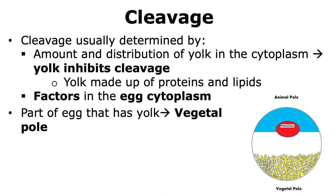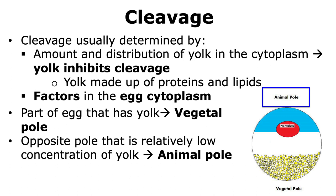In eggs where yolk is present, we can divide the egg into two parts. The part with an abundance of yolk is called the vegetal pole — as shown in the figure, the vegetal pole is where the yolk is, towards the bottom. The opposite pole, where there is a relatively low concentration of yolk, is called the animal pole. It's important to know which part of the egg is the vegetal pole and which is the animal pole.